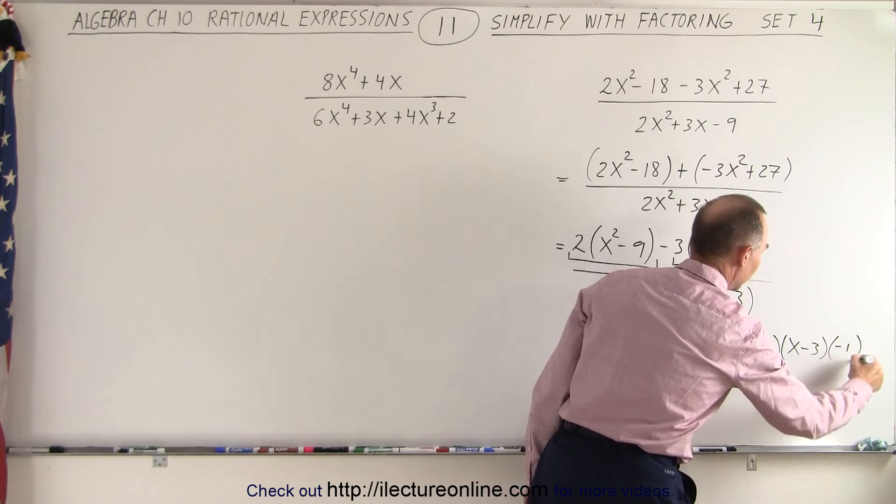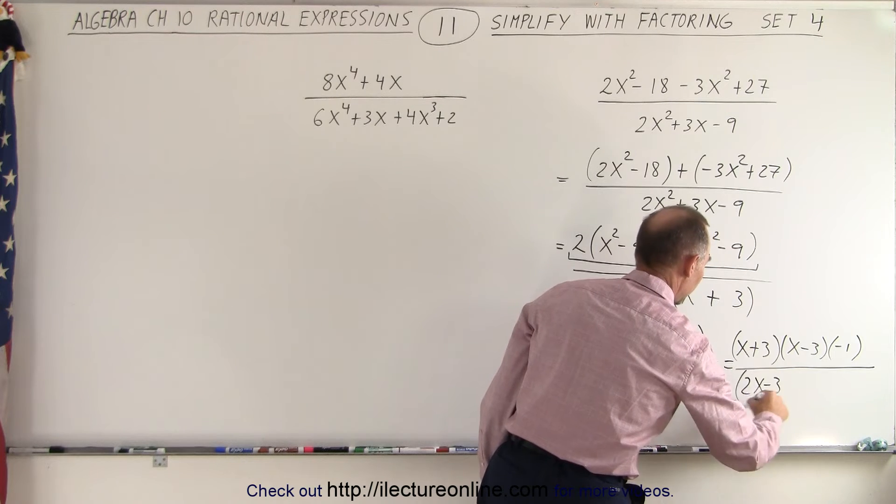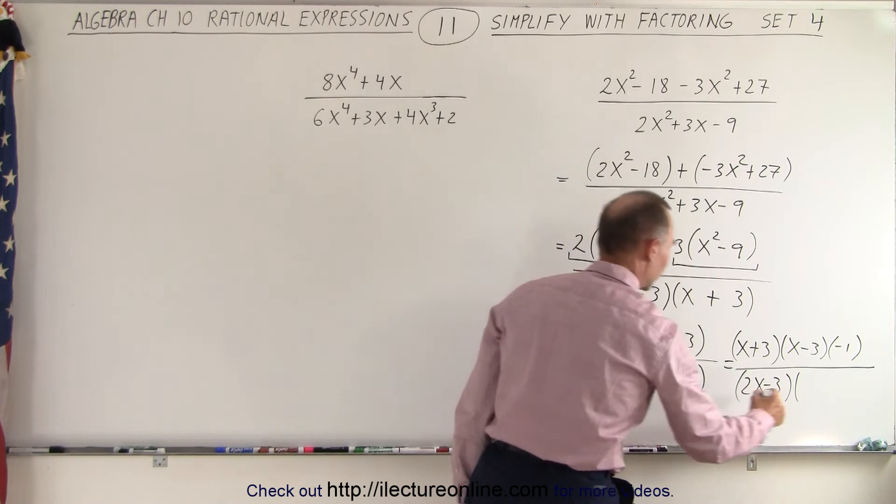2 minus 3 would be minus 1, all divided by 2x minus 3 multiplied times an x plus 3.